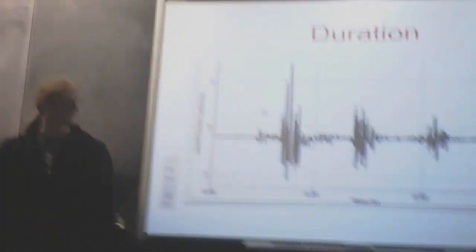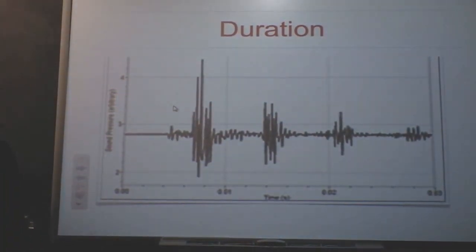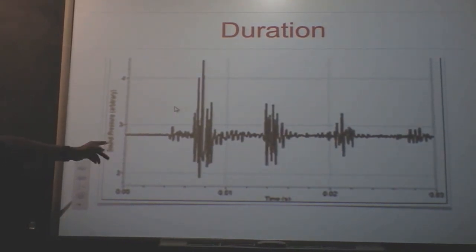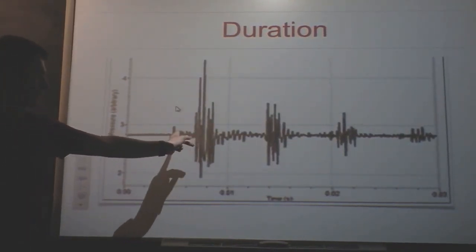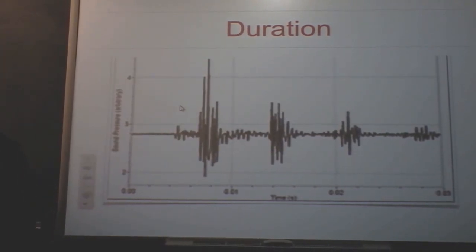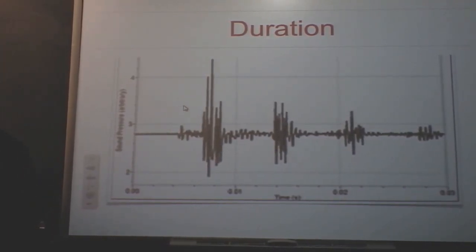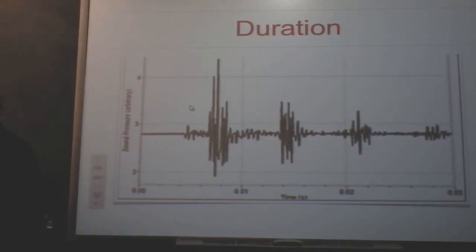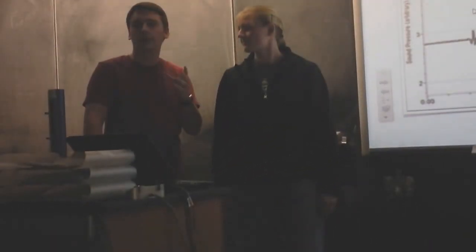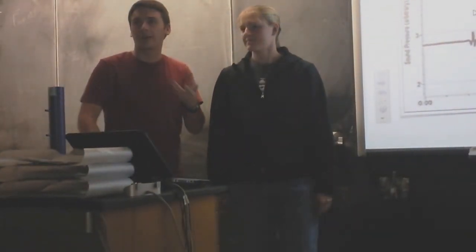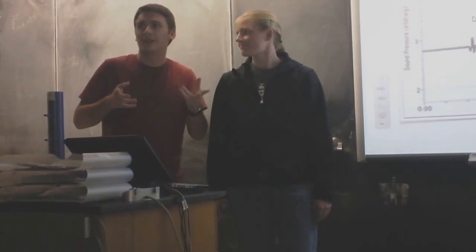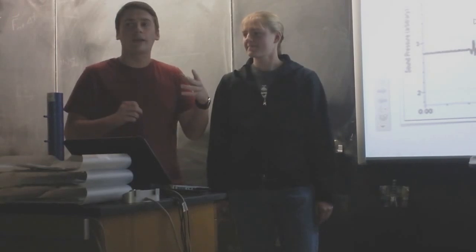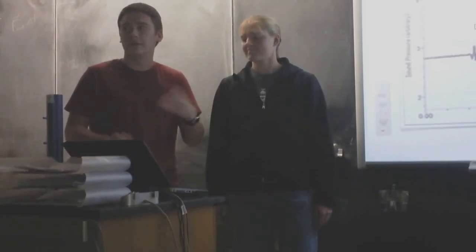The first thing we found to be important in the different emotions was the duration. It's pretty self-explanatory — in the computer program we just highlighted each of the notes and found the length. We compared the notes in the happy version to the notes in the sad version. We were expecting the happy version to have shorter notes because it's more energetic, but it actually turned out that the happy samples had a lot longer note duration than the sad ones.